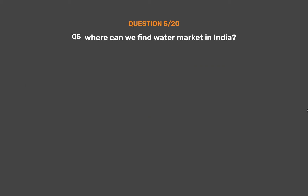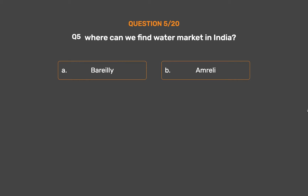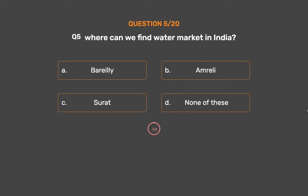Question No. 5. Where can we find a water market in India? Option A: Bareilly. Option B: Amrili. Option C: Surat. Option D: None of these. The correct answer is Option B: Amrili.